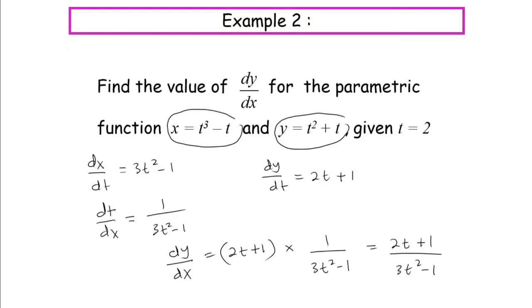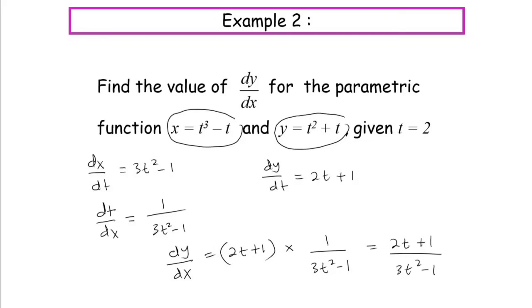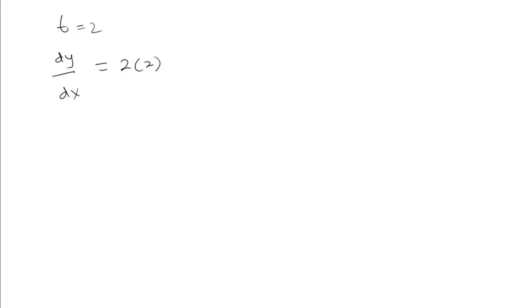So that is our dy/dx. Now we want to find the value of dy/dx when t equals 2. We substitute t equals 2, so the numerator is 2 times 2 plus 1.